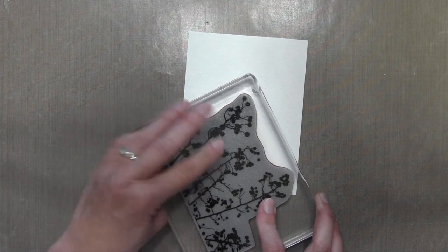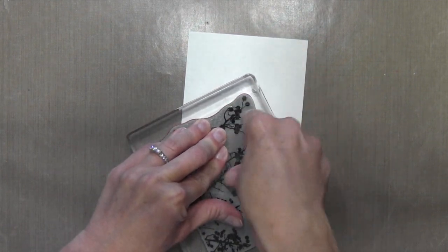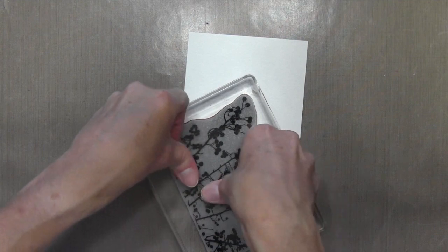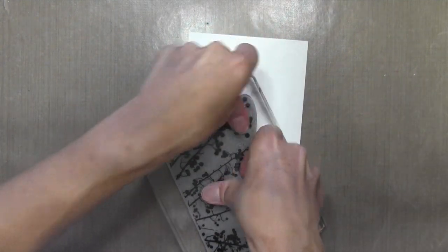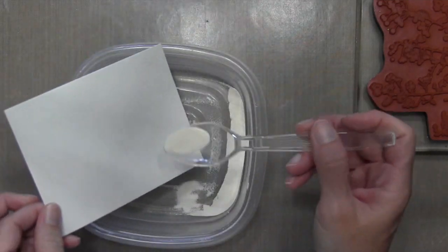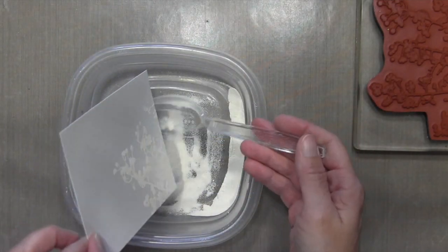So I'm going to stamp this at the bottom so that I have some of the branches kind of popping up from the bottom. And then I'm going to cover it with some white embossing powder. And that way I can see it so when I stamp again, I won't cover any of it.